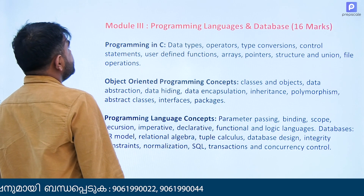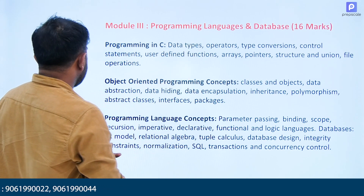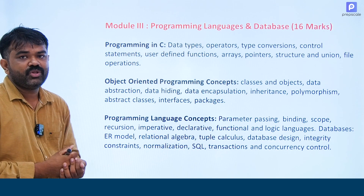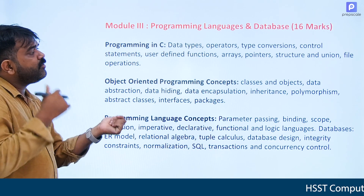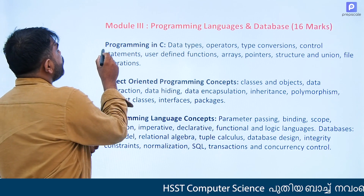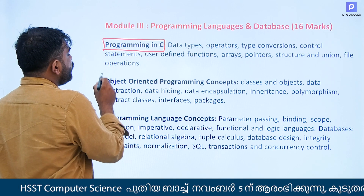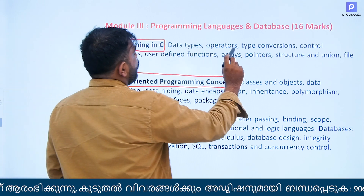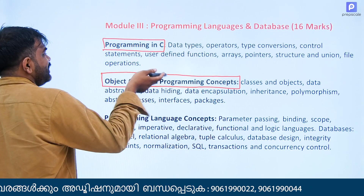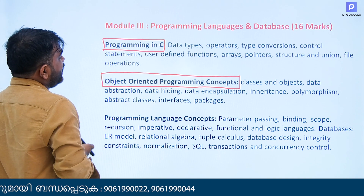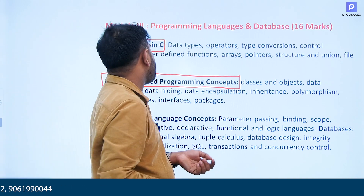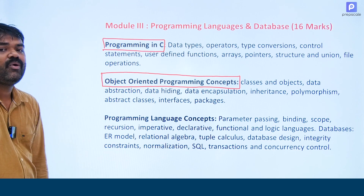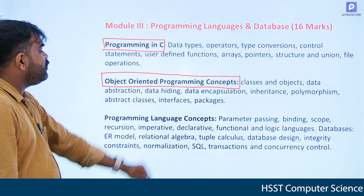Module 3 is Programming Languages and Databases — 16 marks. It covers Programming in C: data type operations, type conversion, control statements, user-defined functions, array pointer, structure, union, file operations. You will also see programming output questions. Object-Oriented Programming concepts are covered.